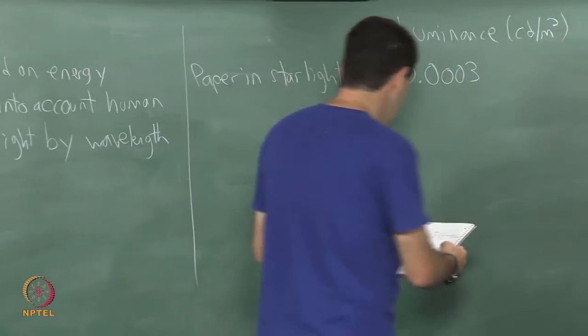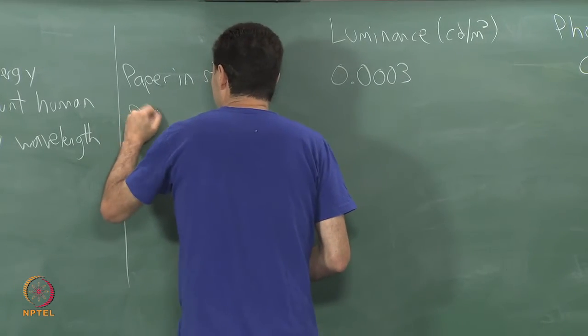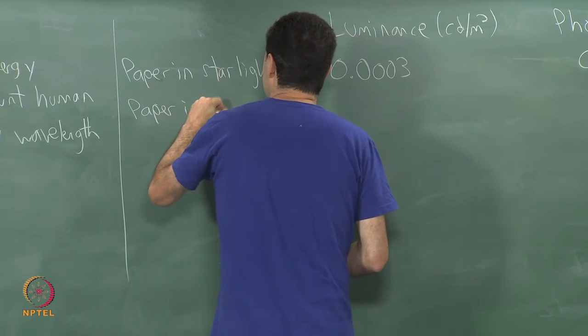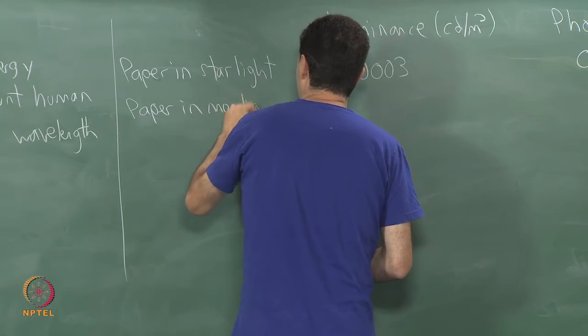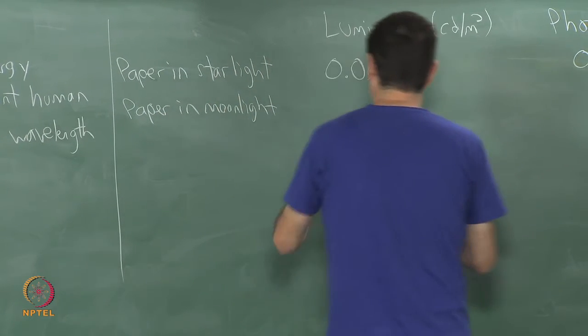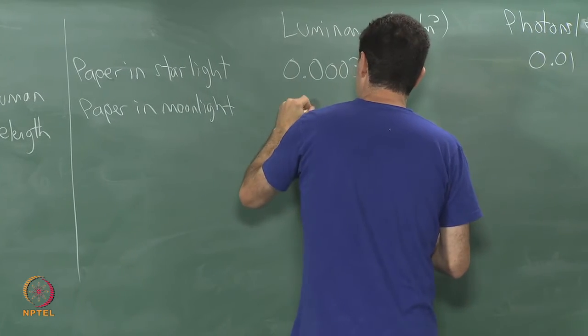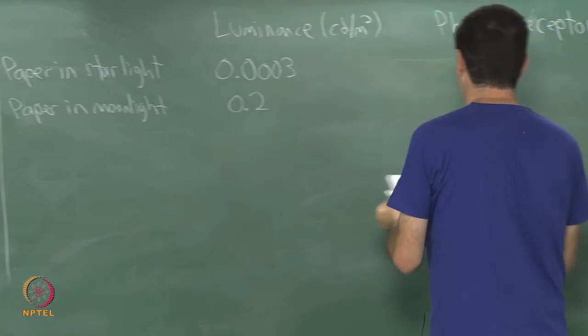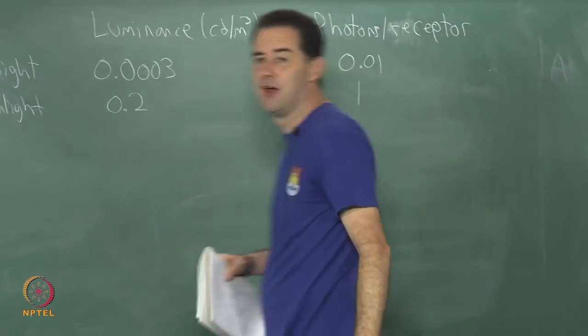That is the lowest end, and then we have paper in moonlight. This goes up to 0.2 and you get about 1 photon per receptor.